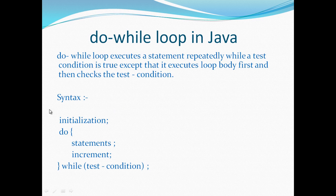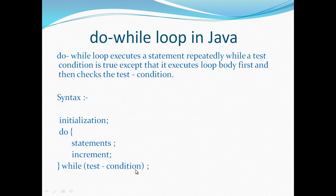If we look into the syntax of the do-while loop, we see that the first step is the initialization step. Then comes the 'do' keyword with a pair of curly braces containing statements — which is also called the body of the do-while loop. After the statements there comes an increment step, and as soon as the curly brace ends, there comes the 'while' keyword followed by parentheses containing the test condition.